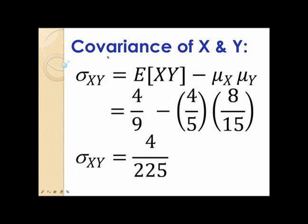Finally, we can now compute the covariance of x and y using the computational formula. Sigma xy is equal to the expected value of x times y minus mu of x times mu of y. Earlier, we found the expected value of xy to be 4 over 9, mu of x to be 4 over 5, and mu of y to be 8 over 15. Simplifying, sigma xy equals 4 over 225. I hope you learned something from this video. Thanks for watching!